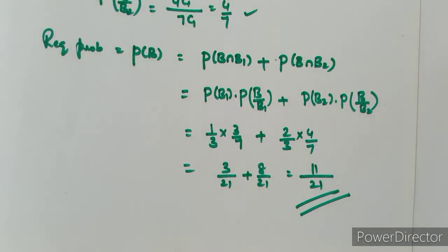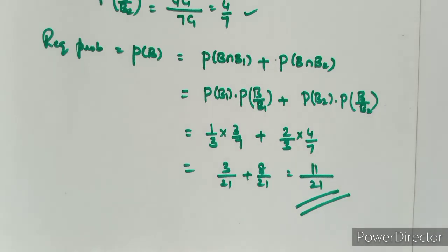The probability of getting a black ball from the bag selected in this manner is 11 by 21. This is a very very important question. There is a similar model question of the same type.